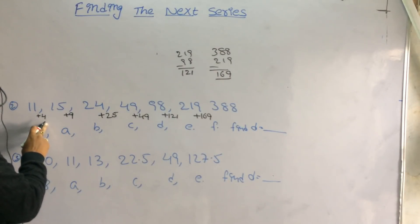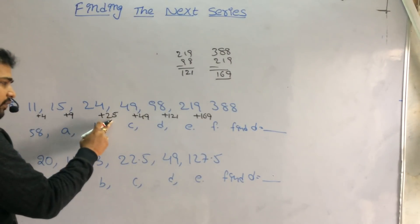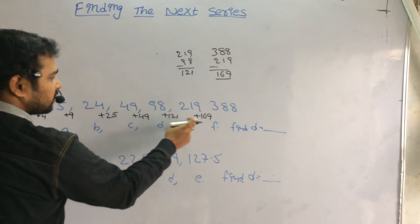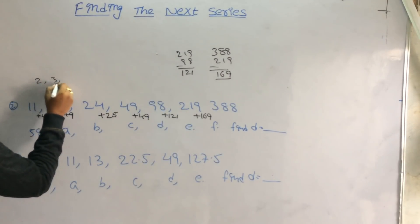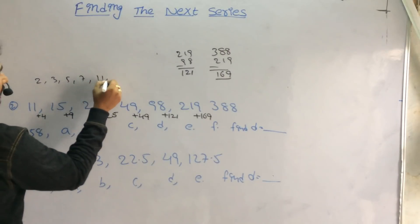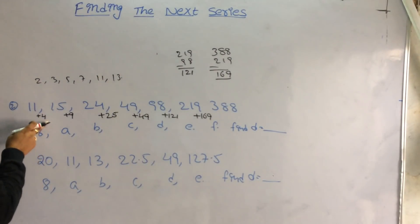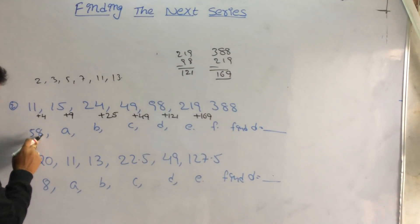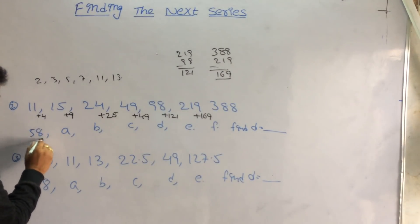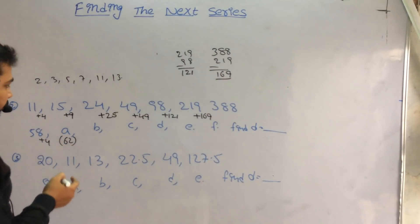The differences are perfect squares: 2 squared, 3 squared, 5 squared, 7 squared, 11 squared, 13 squared — they are the squares of the prime numbers: 2, 3, 5, 7, 11, and 13. We apply the same logic to the given number. From 58 plus 4 it is 62, so A is 62.